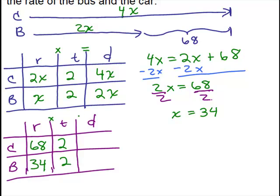We're just going to go ahead and multiply the rate times time to get what their distance is. So 68 times 2 is 136. And 34 times 2, that's going to be the distance for the bus, is 68.